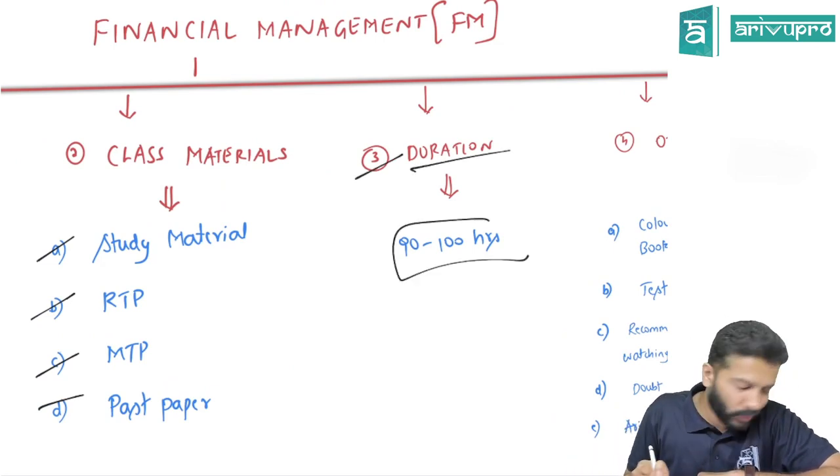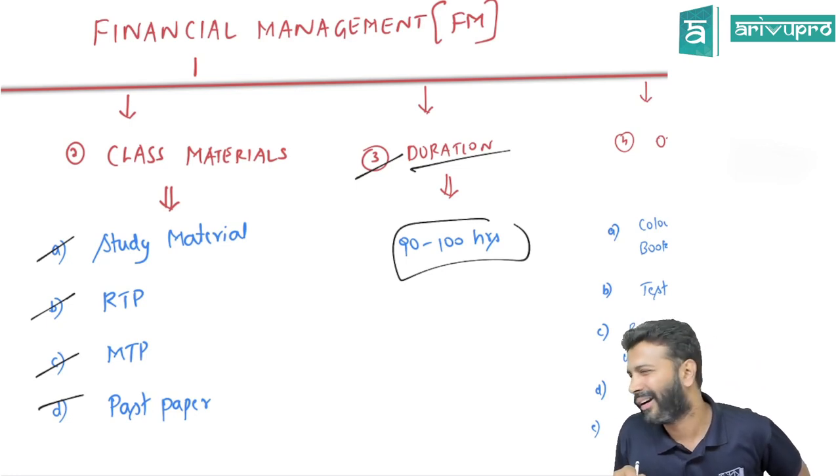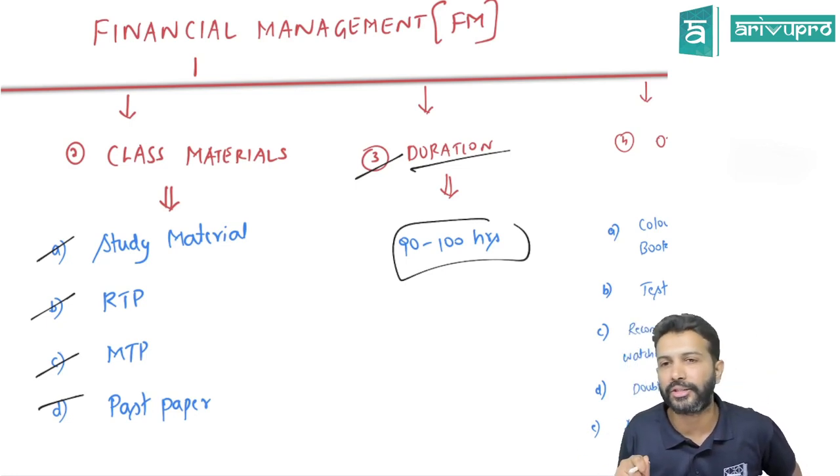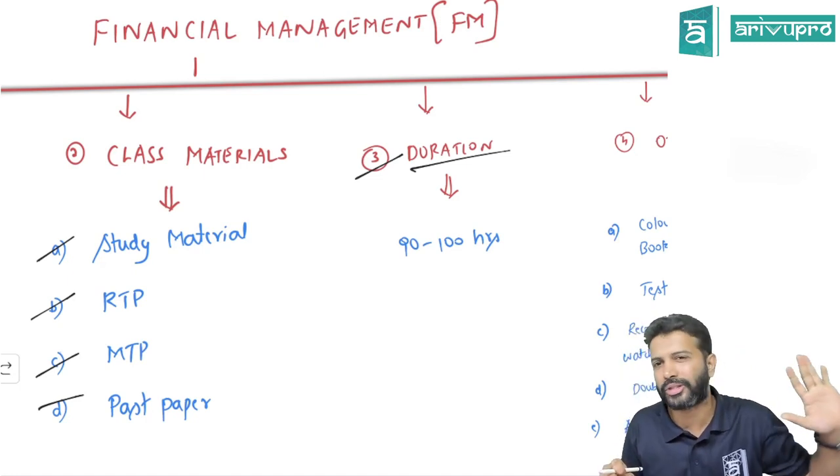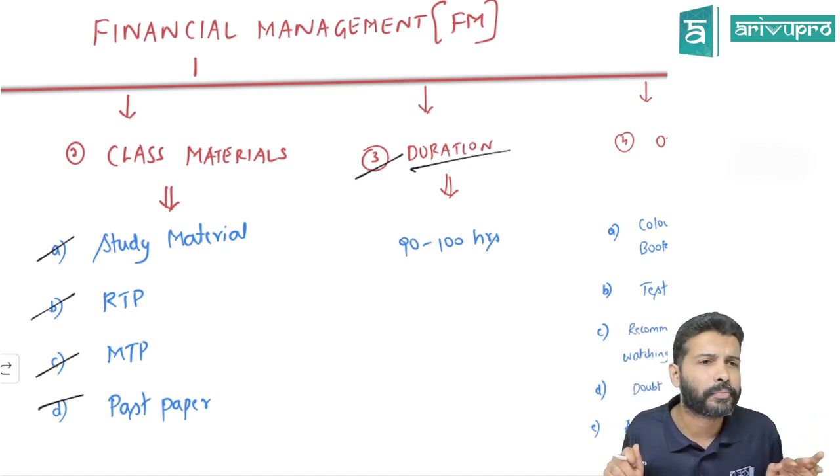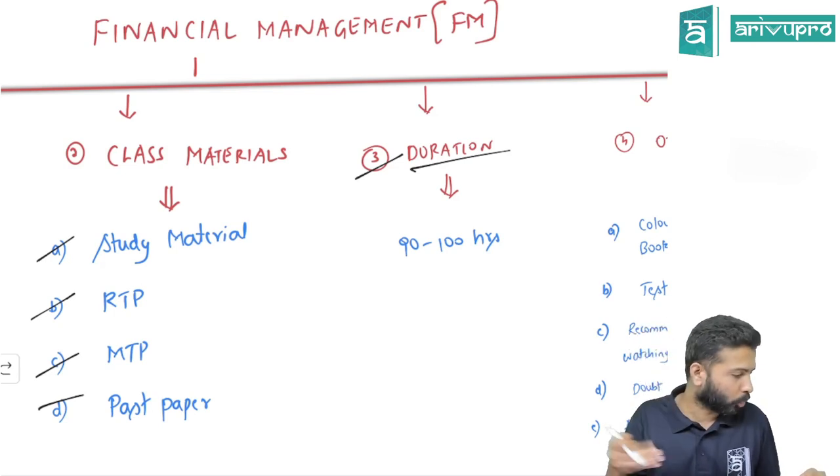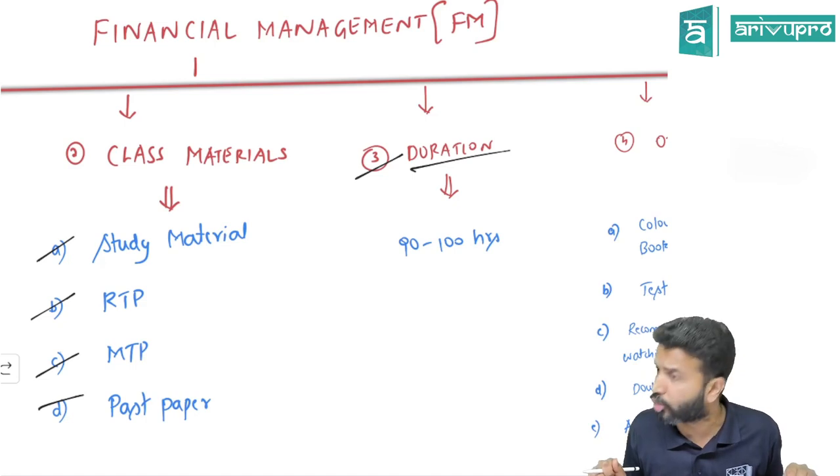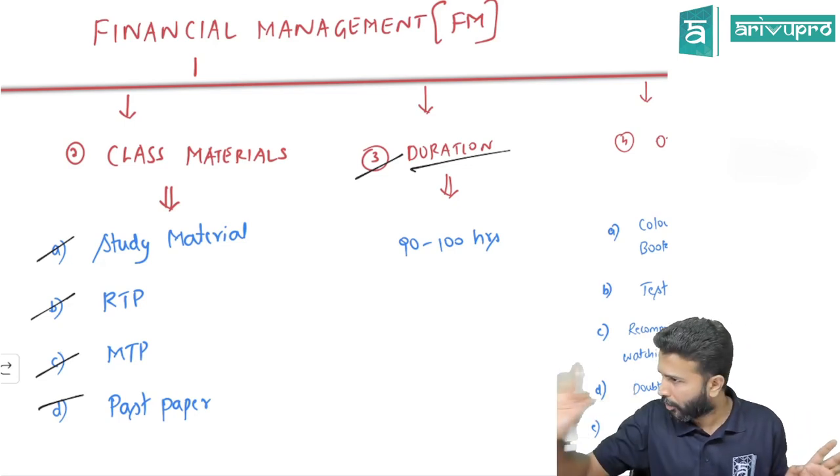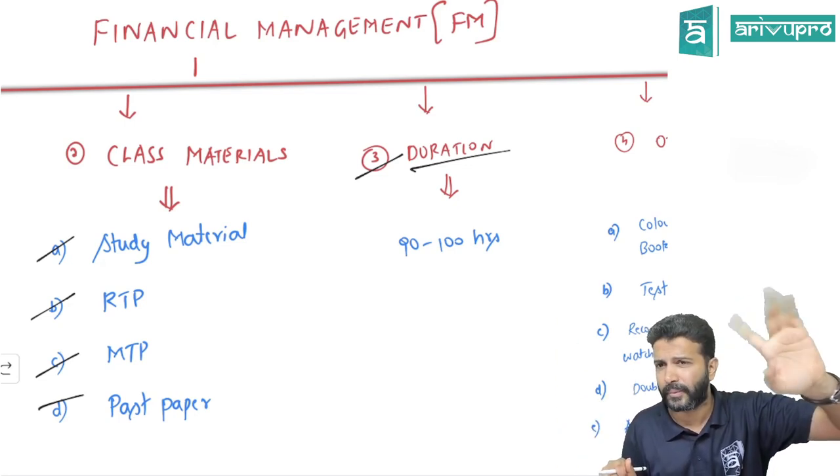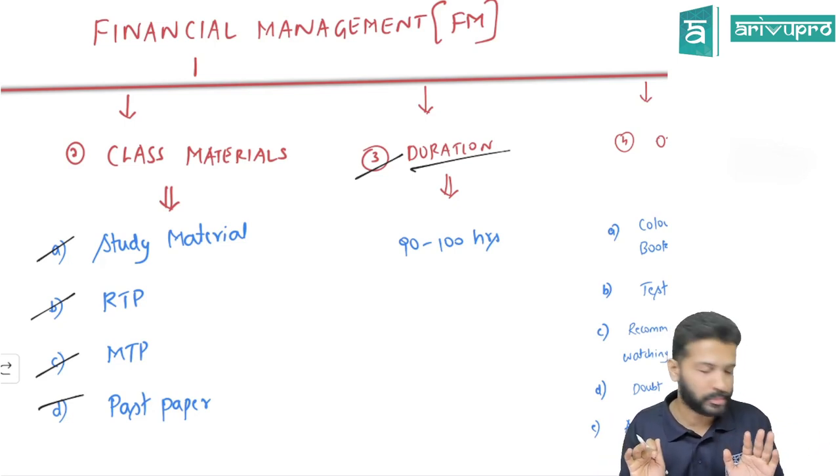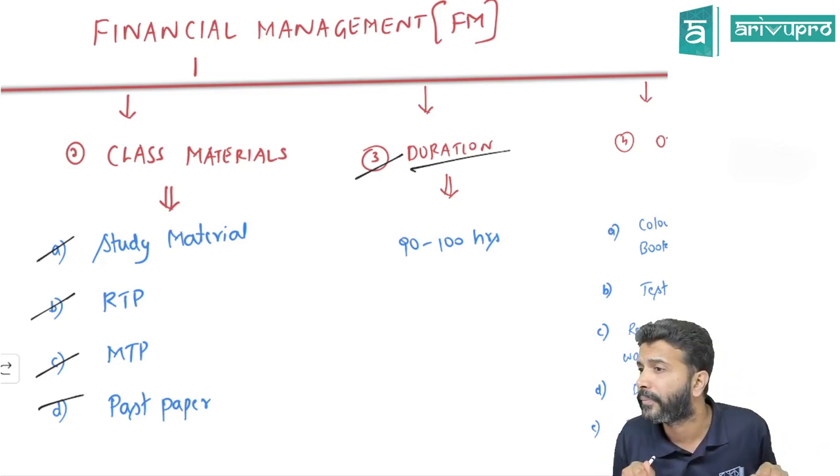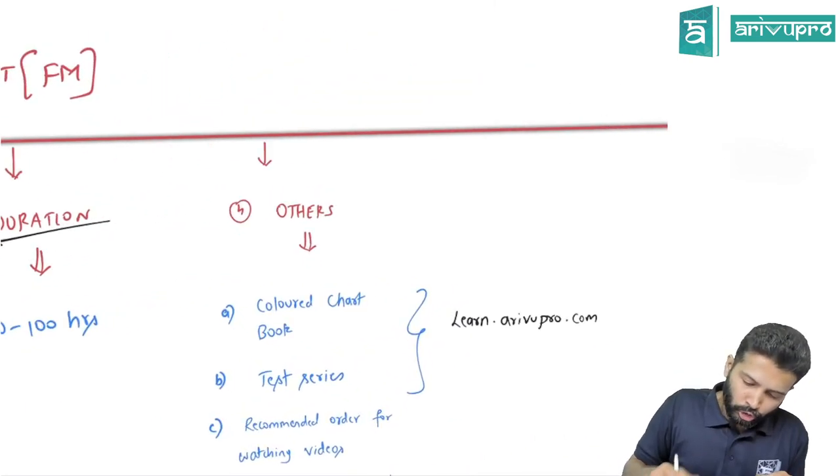Duration - you'll have to see me for about 90 to 100 hours approximately, plus or minus here and there. Many people do FM in 60 to 70 hours, but I'm doing extra because of the number of problems we're doing. I want you to practice more in class itself because FM is a good scoring topic - majority of things are driven by formulas and formats. If you remember those, it's purely memory game.